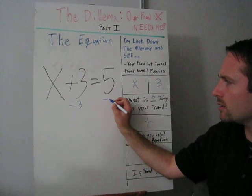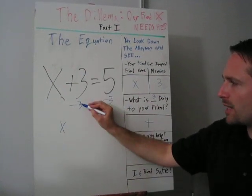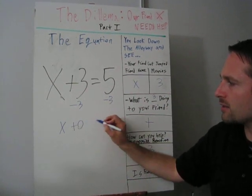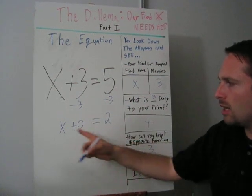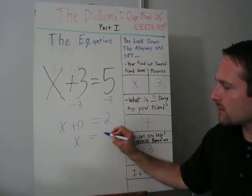You minus 3 on both sides, and we get x. 3 minus 3 is equal to 0. So we're going to be adding 0 is equal to 5 minus 3, which is 2. x plus 0 is just x. And x will equal 2.